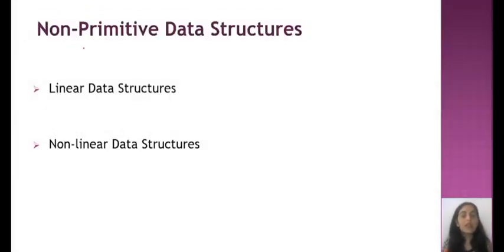Next is non-primitive data structures. Non-primitive data structures are basically of two types. First is linear and second is non-linear. As the name implies, linear means a proper sequence will be there. The best example is array. I hope you all know what arrays are in programming languages. Arrays are linear data structure.